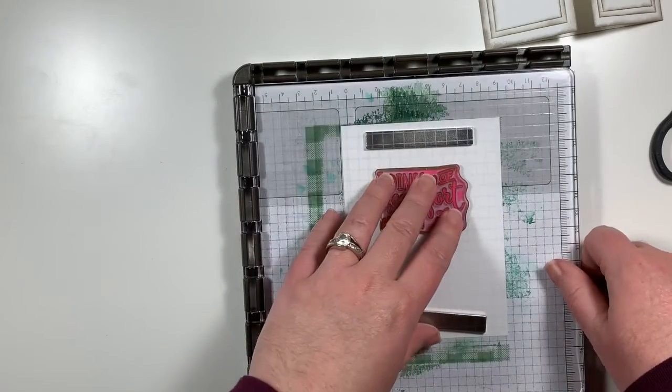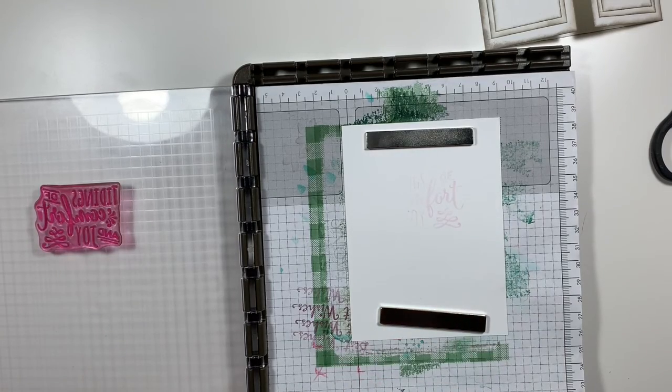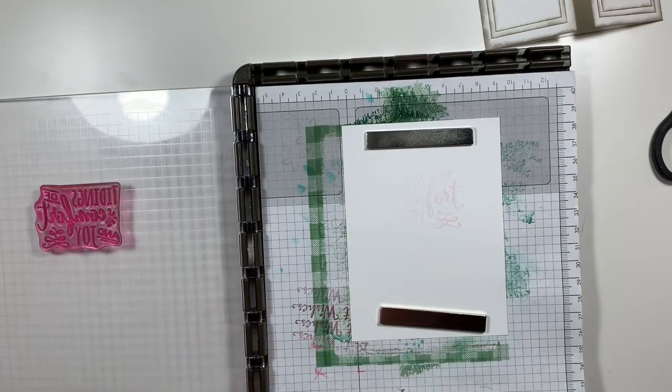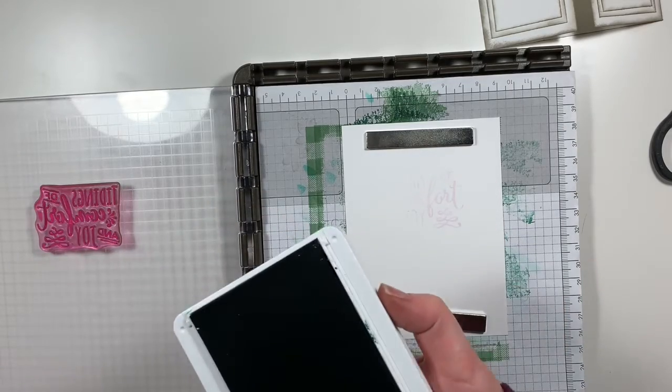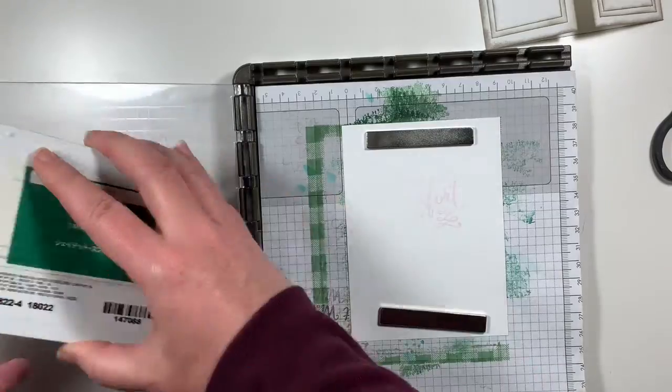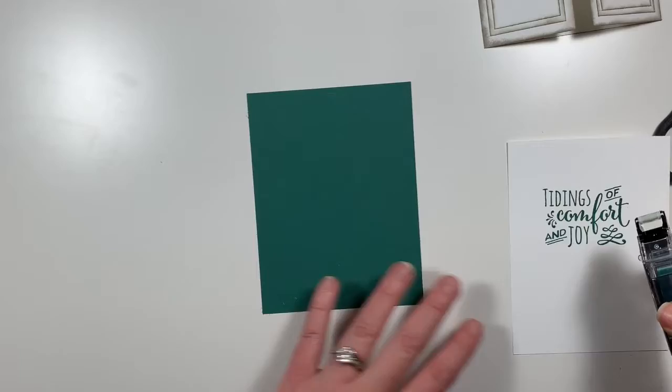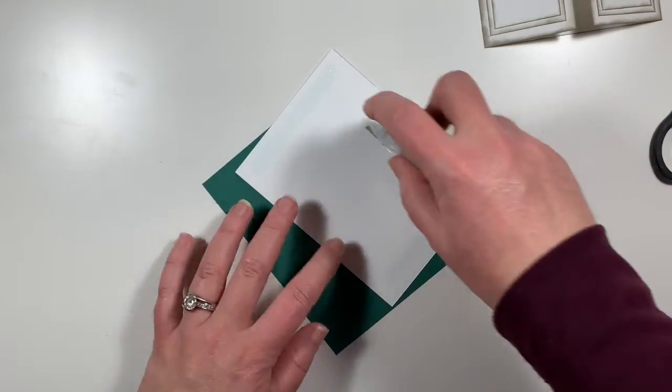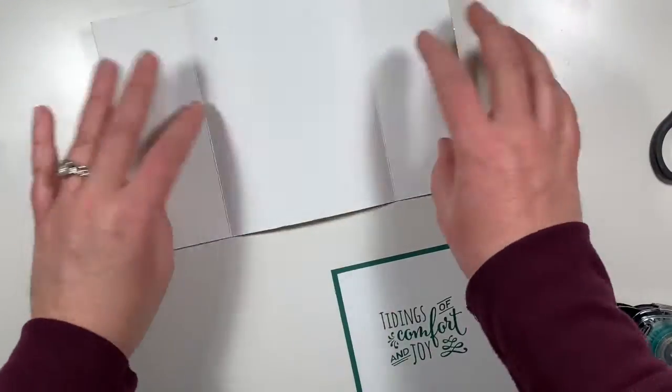And one of the sentiment stamps from the Christmas Pines stamp set is Tidings of Comfort and Joy. So I'm going to put that right up here towards the top in the middle. I'm going to pick that up with my Stamparatus plate. And we're going to ink that up in shaded spruce. You can see that I just cleaned my stamp and it still had a little bit of red residue on it. So that's okay because with the Stamparatus we can stamp it again. So now with my snail I'm going to layer that on top of my shaded spruce card mat. And then I'm going to layer that right on the inside.